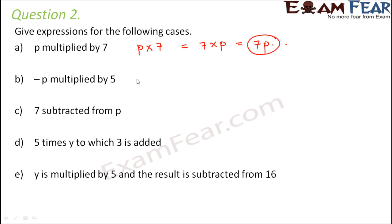Minus p multiplied by 5. So minus p multiplied by 5. This can be written as 5 into minus p. This can be written as minus 5p.